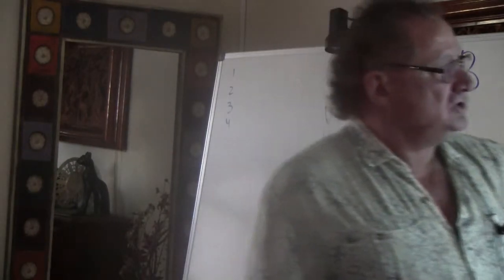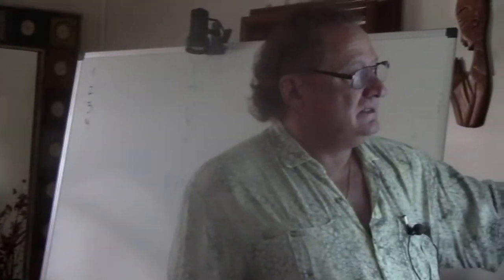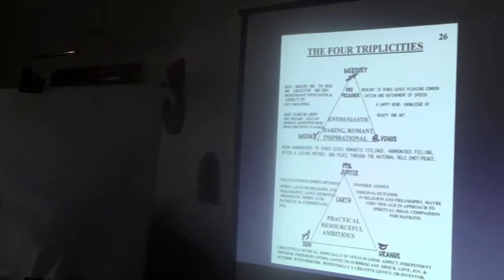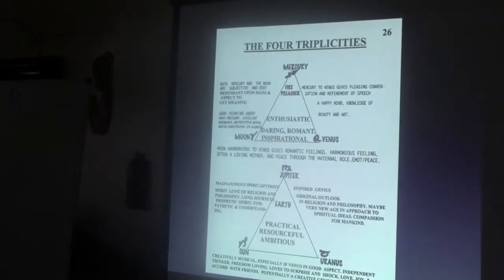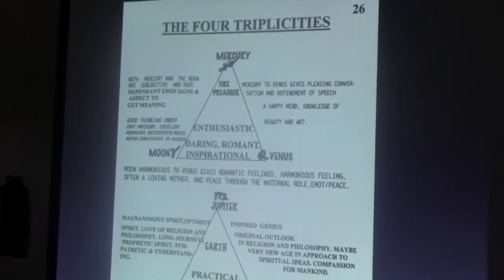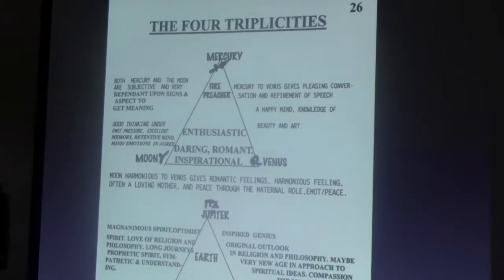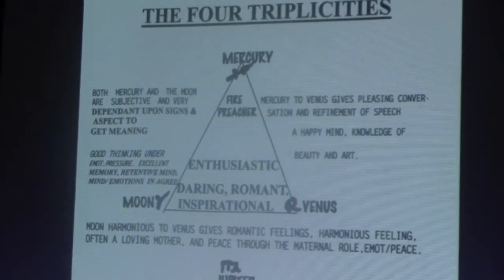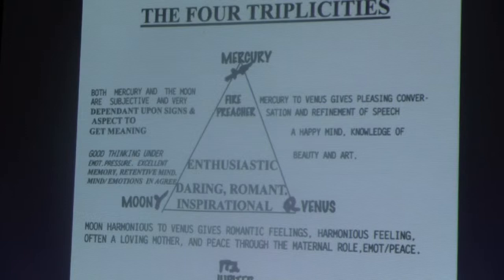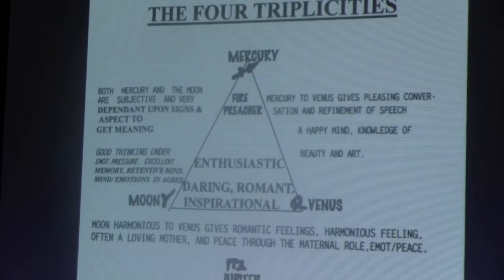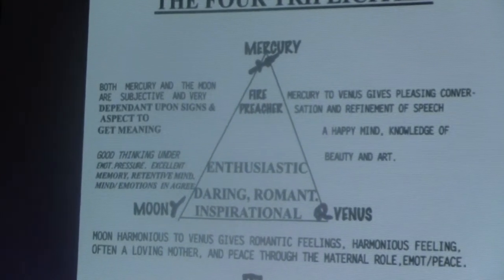Okay, so we're getting anywhere. So, the moon, harmonious to Venus, gives romantic feelings. Harmonious feelings, often a loving mother and a peace through the maternal role, emotional peace through the maternal role. That's Venus, the moon. Somebody has Venus with the moon like that in a good aspect. Is it always a trine? No. It might be a sextile. That's 60 degrees apart. It's a favorable aspect. That's why you want to know the difference between the good aspects and the bad. We call them good and bad, but who's to say what's good and bad in the ultimate end of it? But the point is that if you have these aspects, then you can begin to understand the nature of that person and maybe they need to be a mother. Maybe they need to work in a school with young children. Maybe, you know, the Venus moon, it's where they get their joy and their life.